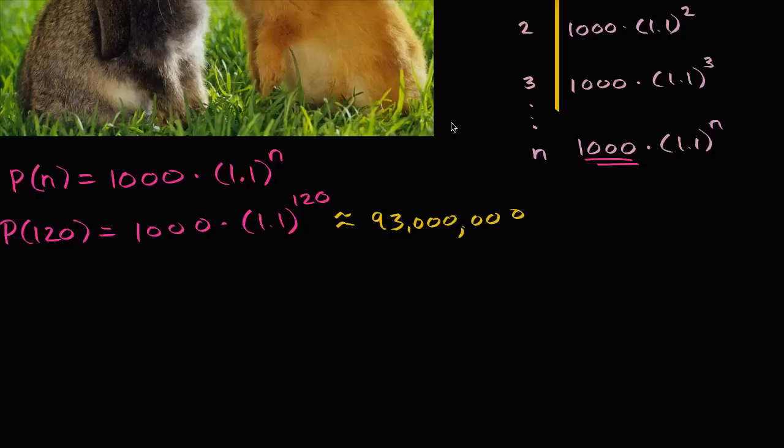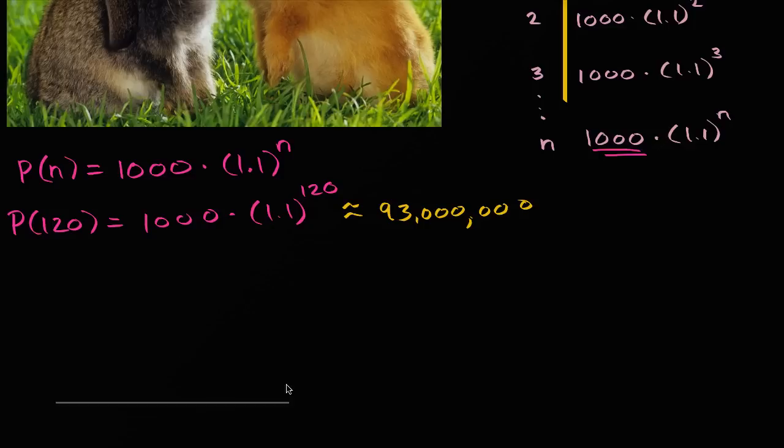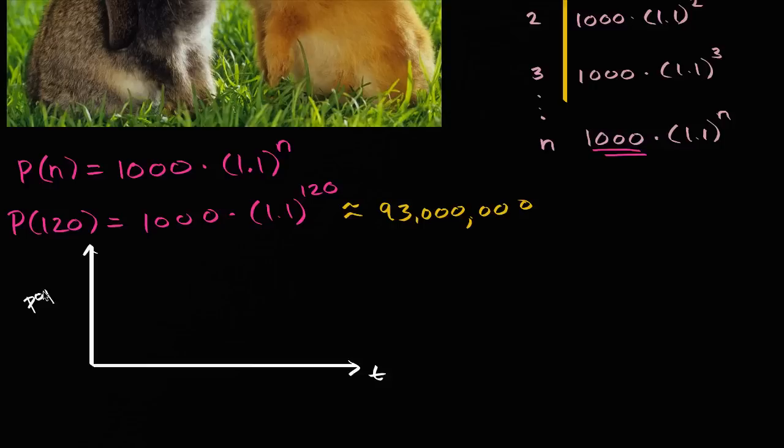And if you were to plot something like this out, if you were to plot the rabbit population with respect to time, you would see a graph that looks, let me draw it. So this axis, it is time, say in months. And this axis, you have your population.